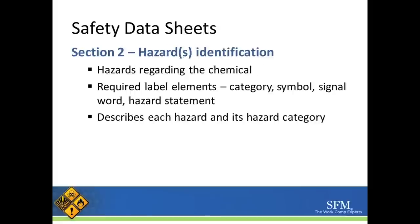The second section is the hazard identification. It must identify the hazards regarding each chemical, the required label elements, and describe each hazard and its hazard category.